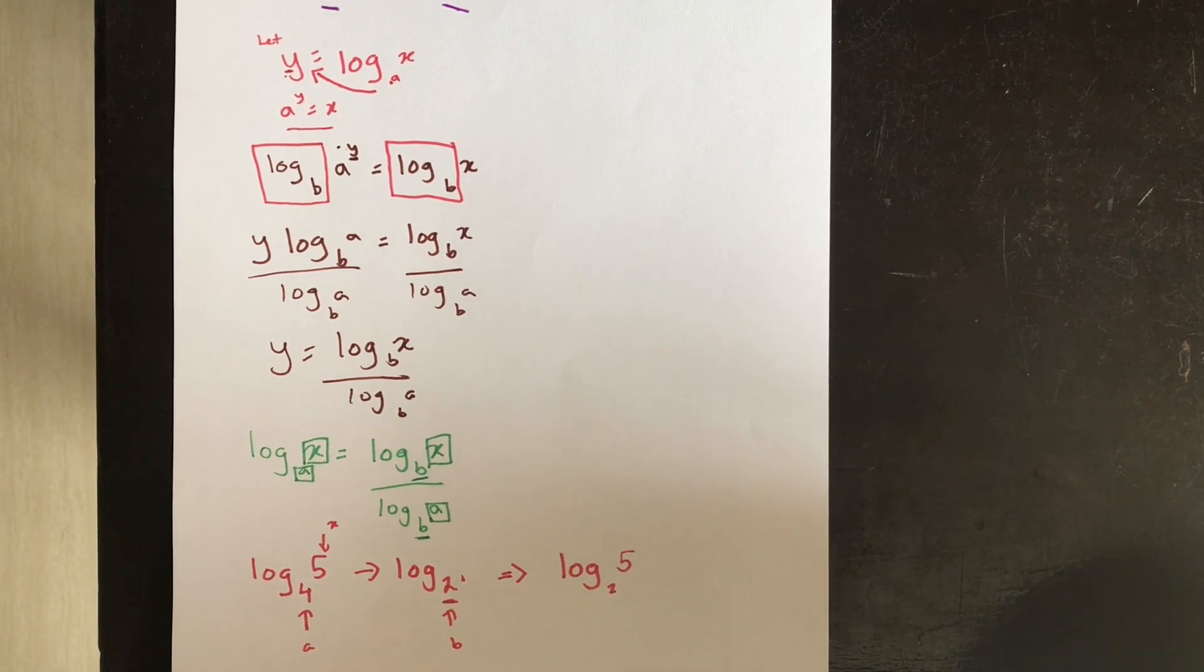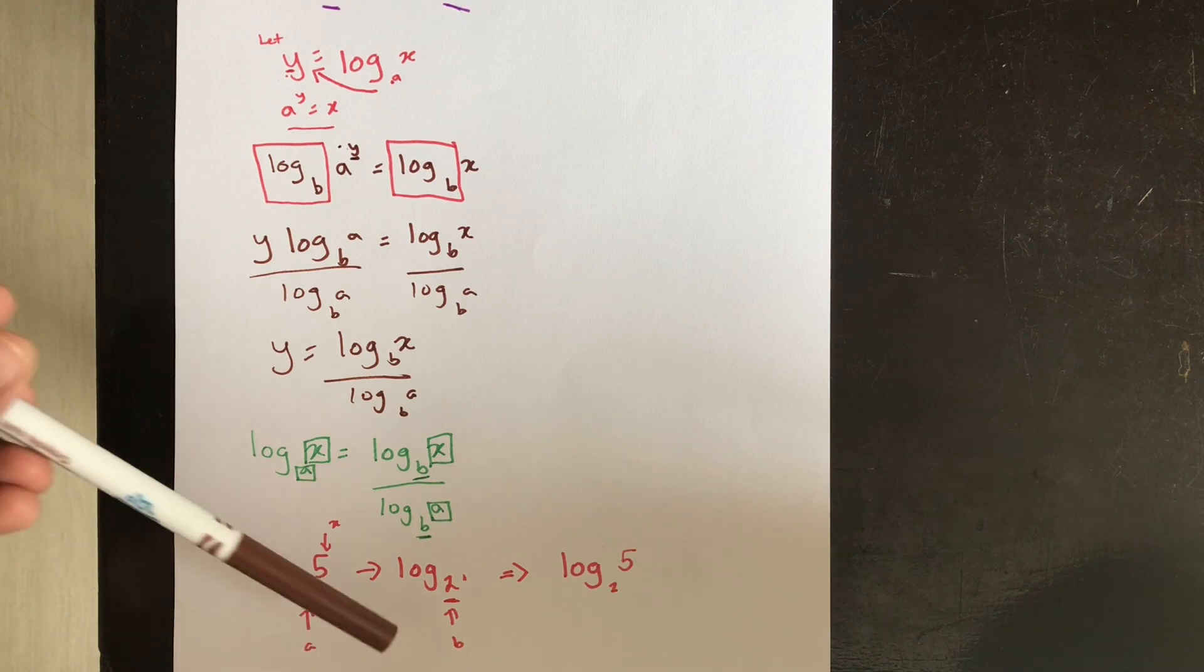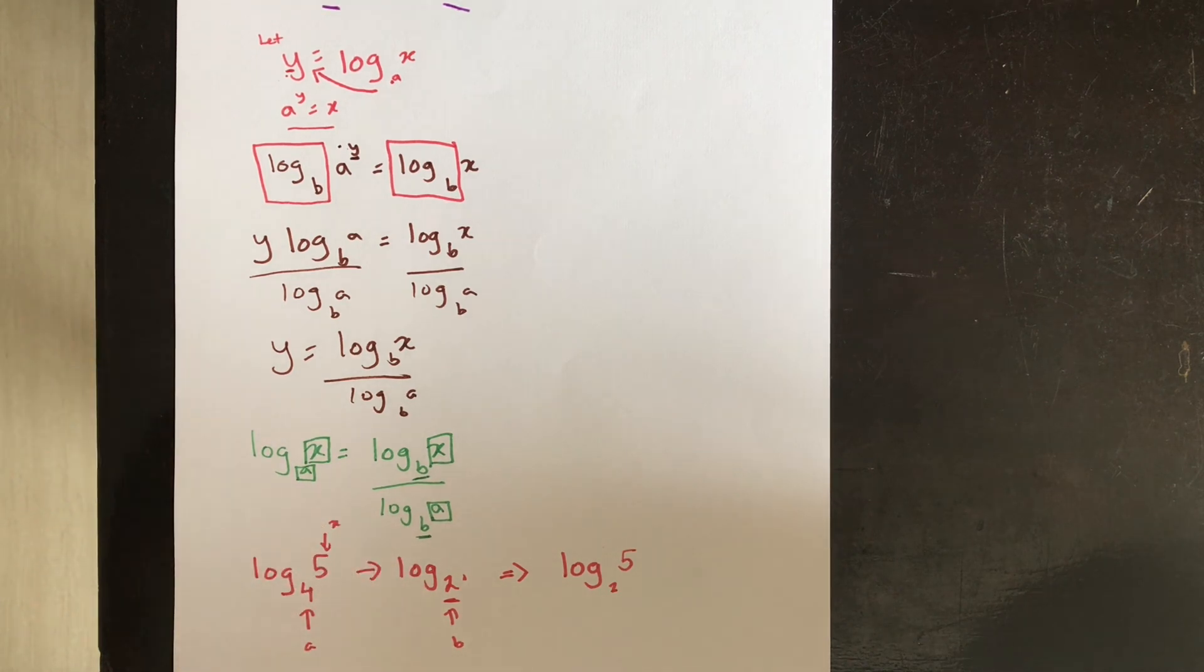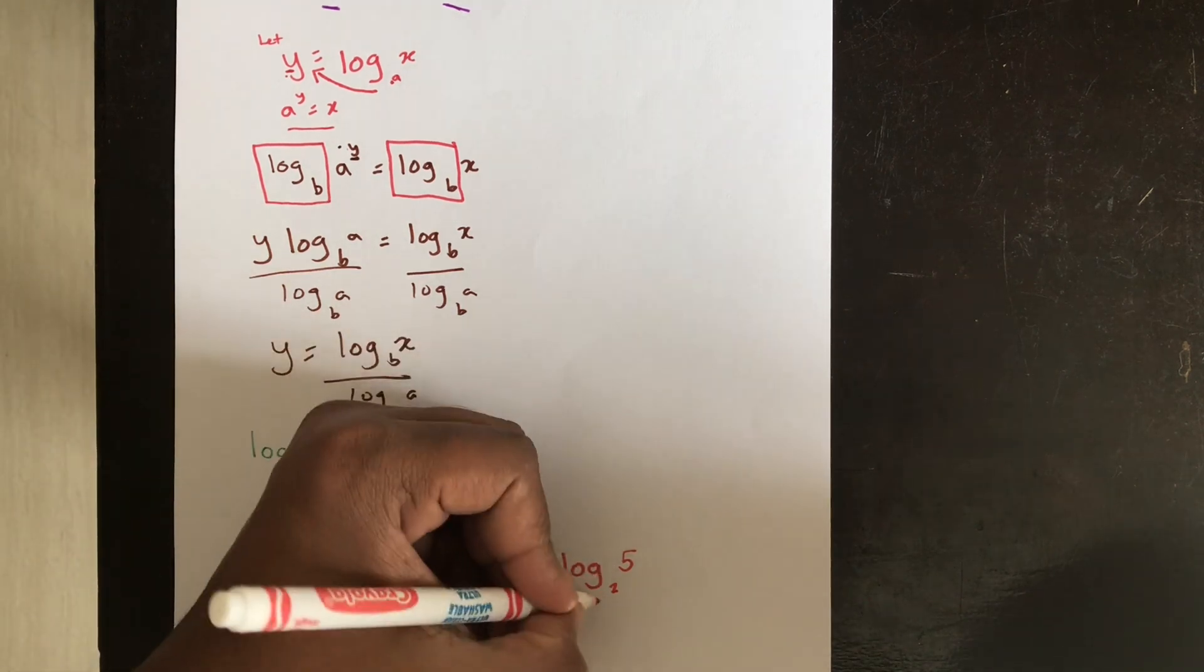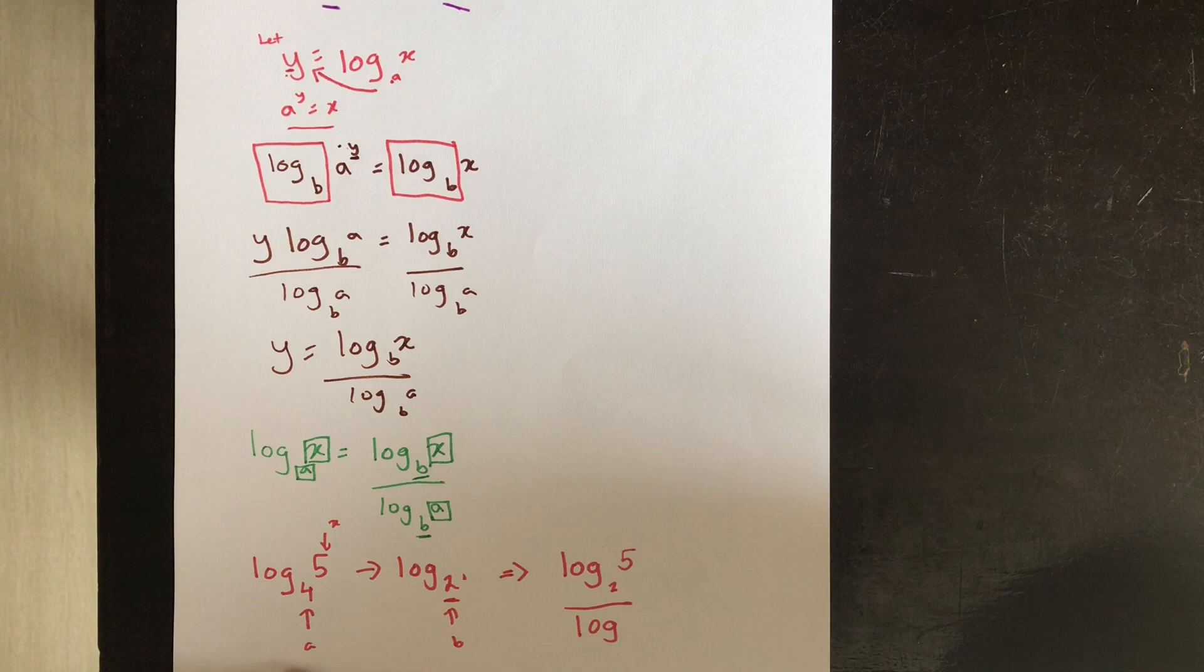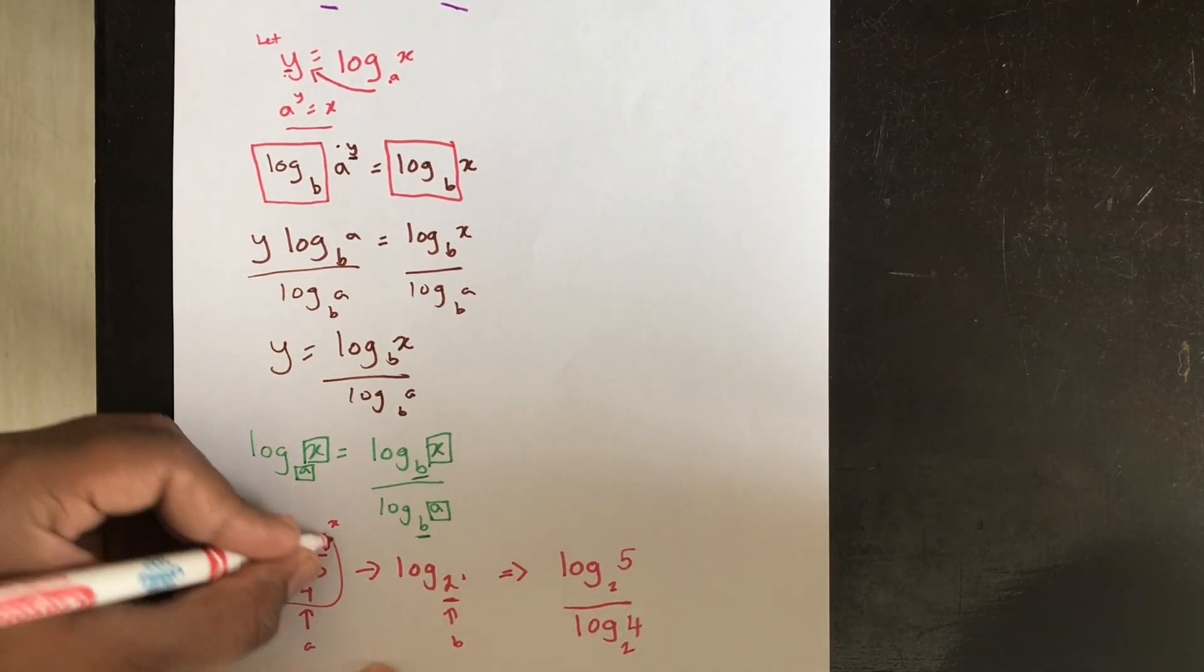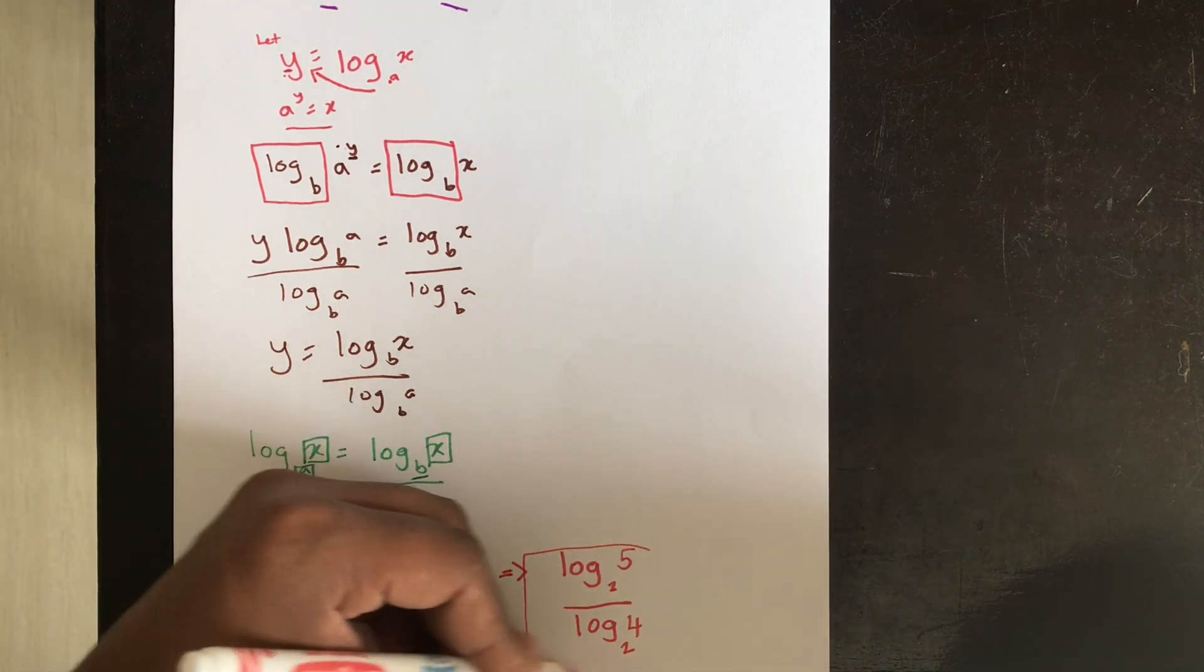So by using this rule, the way how I'll do it is I'll have log of x which is 5, base b which is the base which I want and that becomes 2. So I have log 5 base 2 because my x is 5 and my base is 2. The b is 2, the b is the base which I want. Therefore I have log 5 base 2 divided by log 4 base 2.